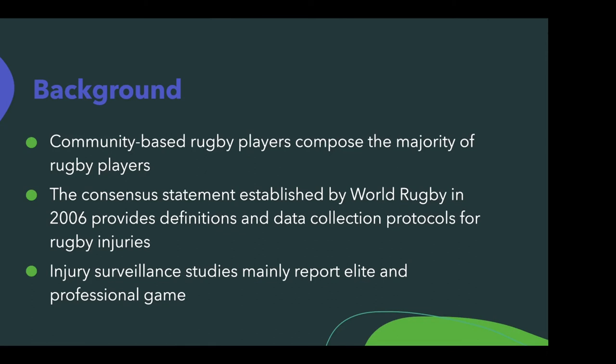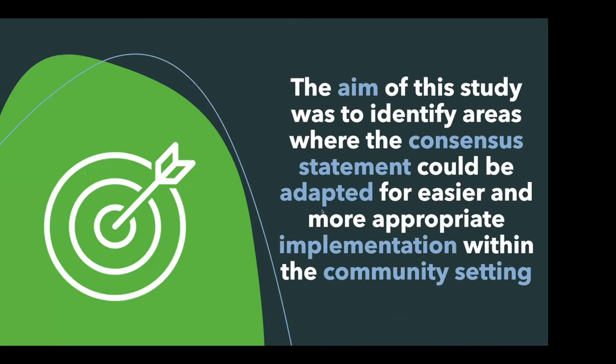What they found was that community-based rugby players and their teams were lacking qualified medical personnel. As a result, they weren't able to fit into the consensus statement and report their injuries. So World Rugby realized they had a gap in knowledge on a lot of these injury reports and were unable to correctly surveil this data. That leads to the aim of the paper, which was to identify areas where the consensus statement could be adapted for easier and more appropriate implementation within the community setting.